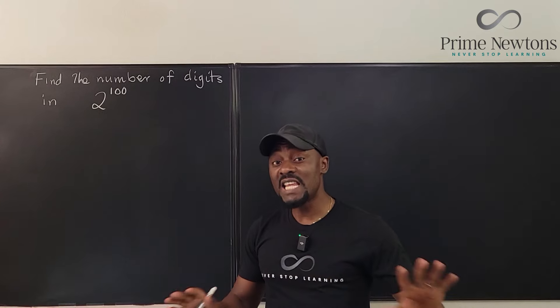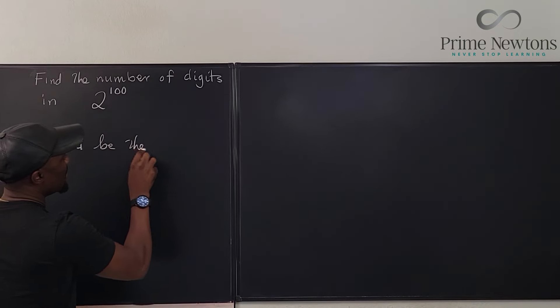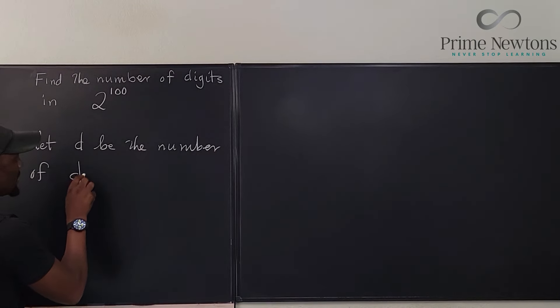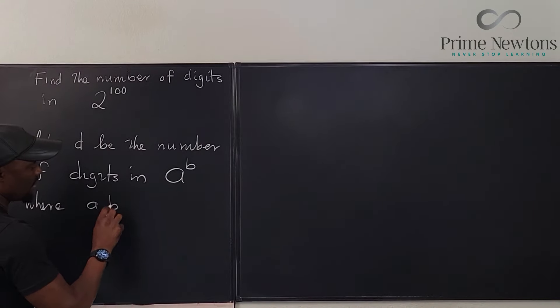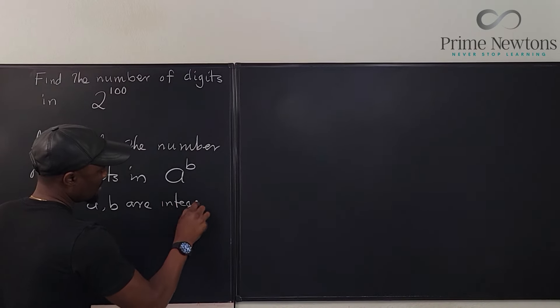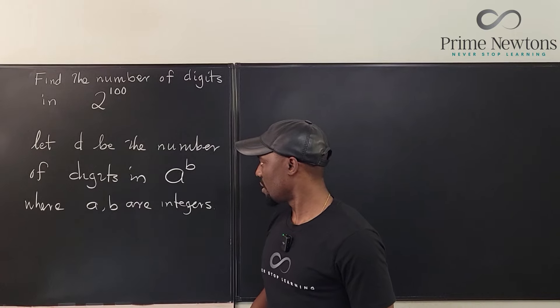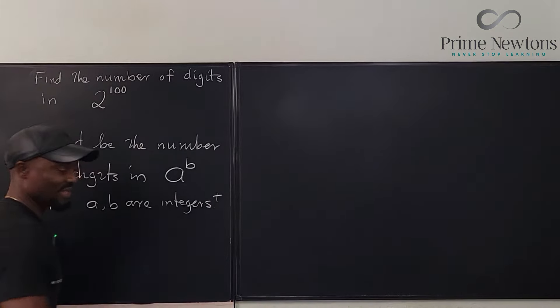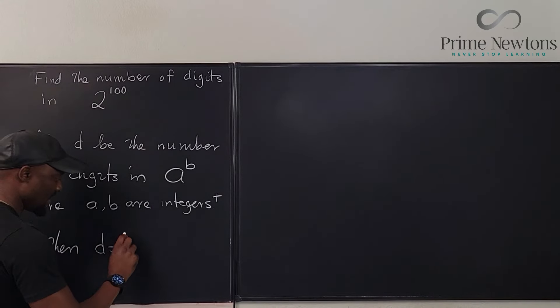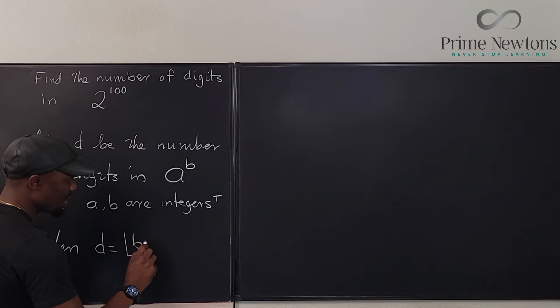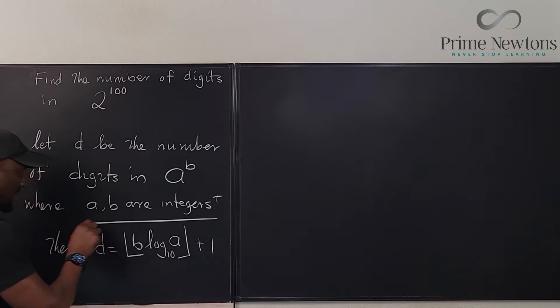So the formula for the number of digits in any number: let D be the number of digits in A raised to power B, where A, B are positive integers. Then D is equal to the floor of the exponent B times the log to base 10 of A plus 1. This is the formula you need.